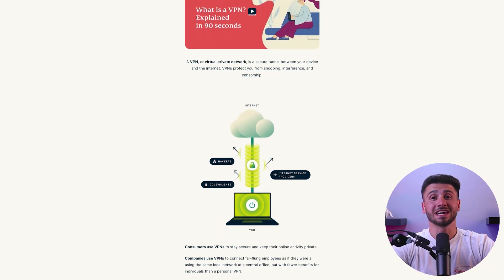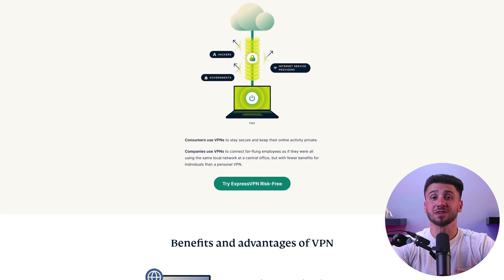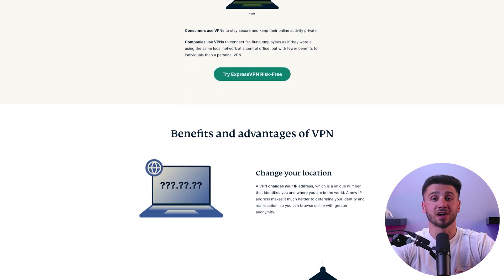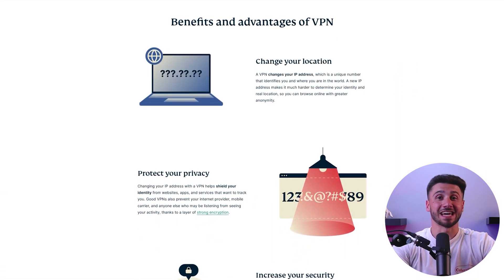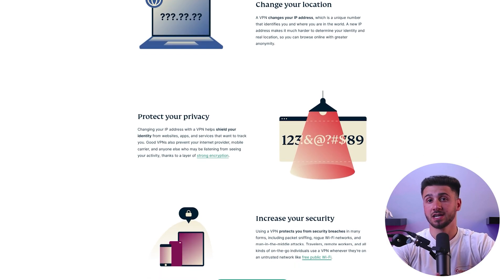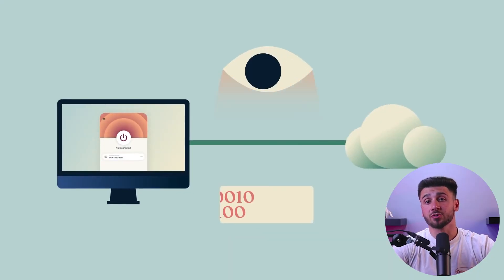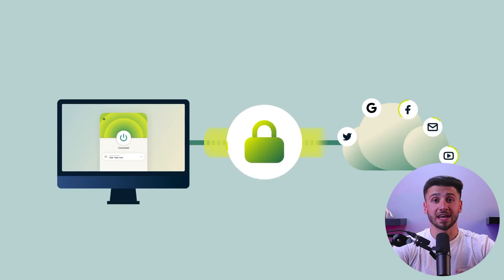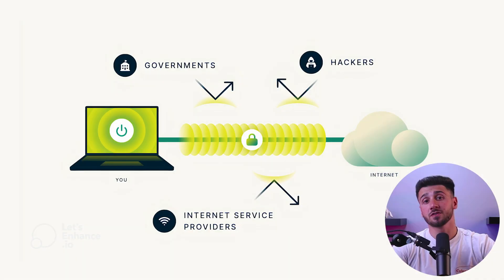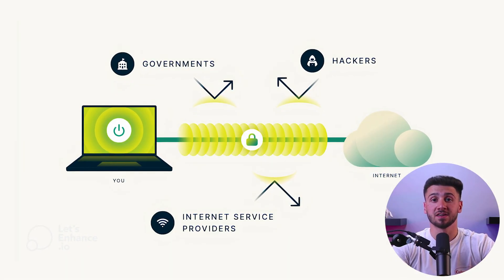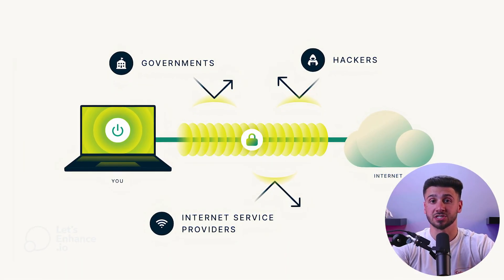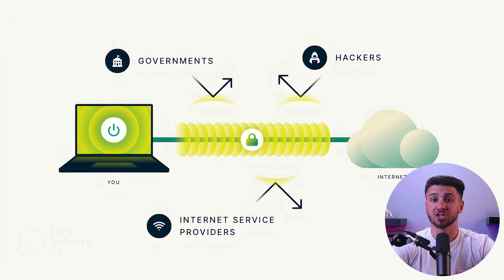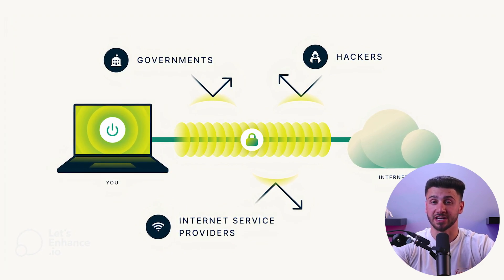First of all, a VPN app is a tool that allows you to establish a secure and private connection between your device and the internet. VPN apps encrypt your internet traffic and route it through a server located in a different location, which hides your online activity from your internet service provider and anyone else who may be monitoring your internet connection.